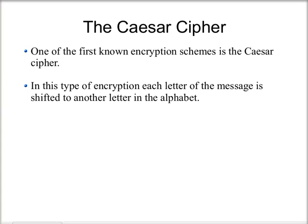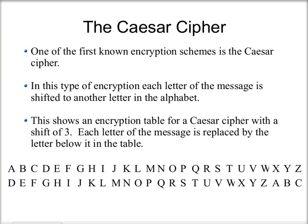The first encryption scheme we're going to go over is the Caesar Cipher, and this is one of the first known ways of encoding a message. In this type of encryption, each letter of the message is shifted by a given number of places to another letter in the alphabet. This table here shows a Caesar Cipher with a shift of three. Each letter of the message you want to encrypt is replaced by the letter below it in the table — the letter that is three places to the right. So A is replaced by D, B is replaced by E, and so on.